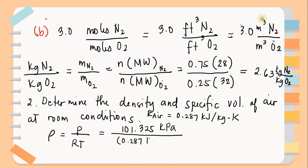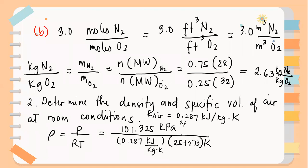We use 0.287 kilojoule per kilogram kelvin for the specific gas constant. Since this is at room condition, the temperature is 25 degrees Celsius plus 273 Kelvin. We are not using standard temperature; instead we use 25 plus 273. The temperature at room condition is 25 degrees Celsius. Cancelling units: kilopascal is newton per square meter, kilojoule is newton meter — cancel the kilo and the kelvin.